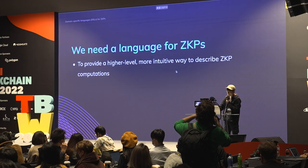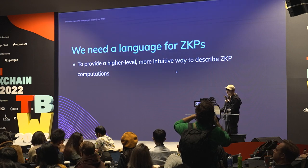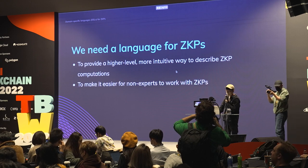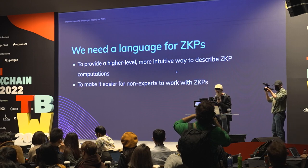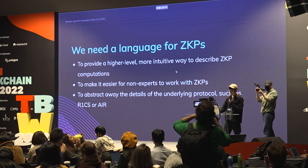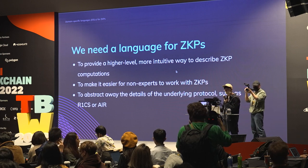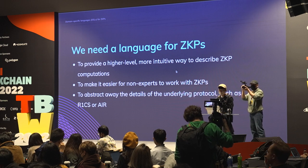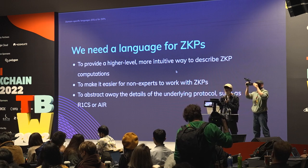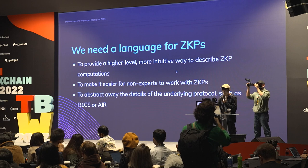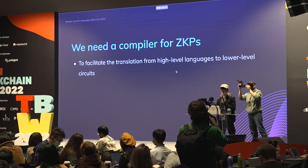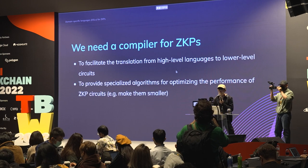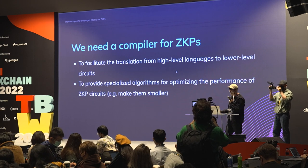That's why we need a programming language for ZKPs — to provide a higher level and more intuitive way to describe ZKP computations, and make it easier for non-experts to work with ZKPs. It also abstracts away the details of the underlying protocol so developers can compile into R1CS or AIR without having to understand the underlying stuff. To facilitate this translation we also need a compiler.